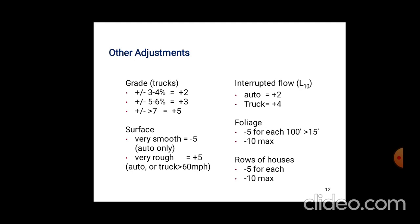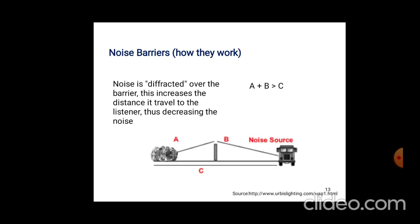Interrupted flow, auto—plus 2 and plus 4. Surface very smooth—minus 5 and foliage minus 5 to 10 to 15. These are conditions provided to minimize or reduce noise.